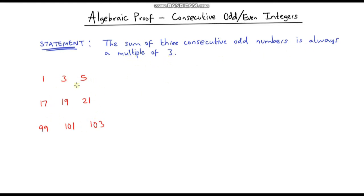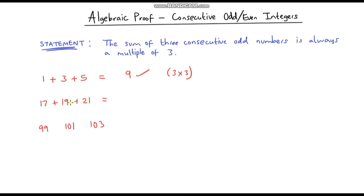Let's first see that it works for these three examples, then we'll prove it using algebra. What is 1 plus 3 plus 5? That gives us 9, and 9 is definitely a multiple of three because it is 3 times 3. Now 17 plus 19 plus 21: 19 plus 21 is 40, and 40 plus 17 is 57, which is also a multiple of 3.